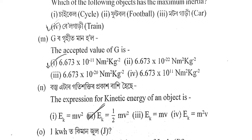Next question: The accepted value of the gravitational constant G. Options presented: 6.673 × 10⁻¹¹ N·m²·kg⁻²; 6.673 × 10⁻²² N·m²·kg⁻²; 6.67 × 10⁻²⁰ N·m²·kg⁻². The correct answer is option 1 — 6.673 × 10⁻¹¹ N·m²·kg⁻².